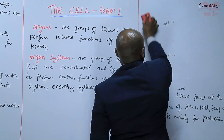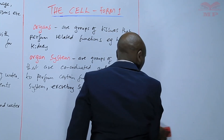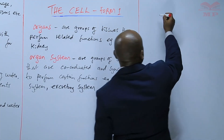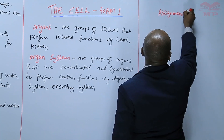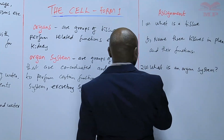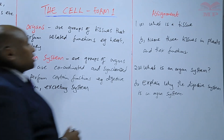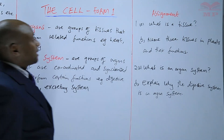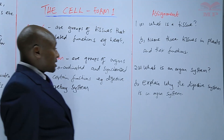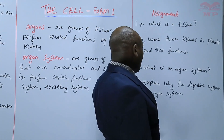That marks the end of the topic of the cell. Before we finish, here is a short assignment. Question 1A: What is a tissue? Question 1B: Name three tissues in plants and their functions. Question 2A: What is an organ system? Question 2B: Explain why the digestive system is an organ system.